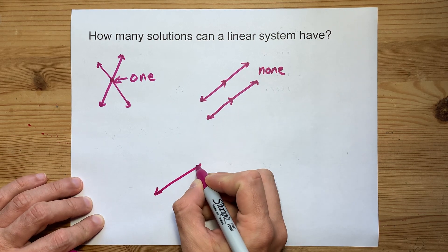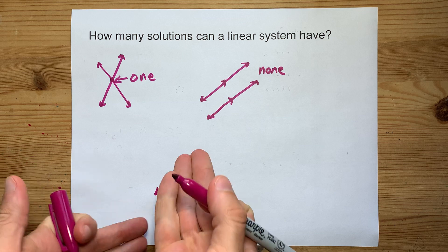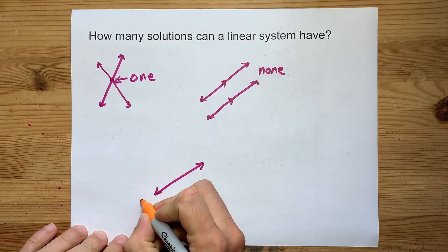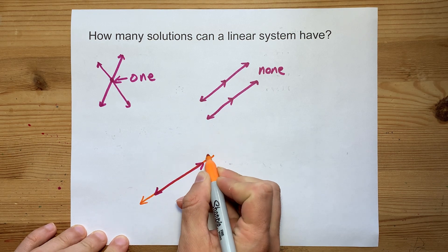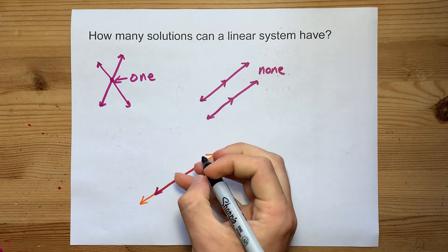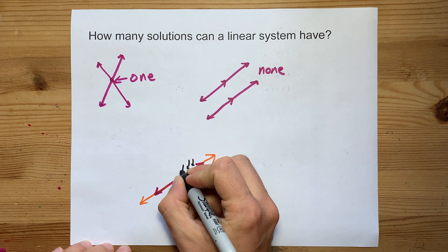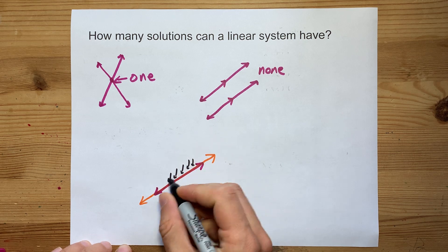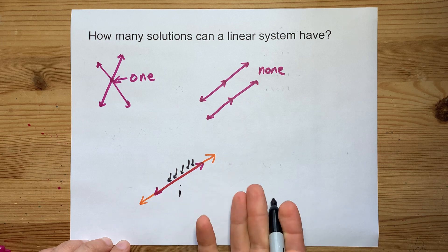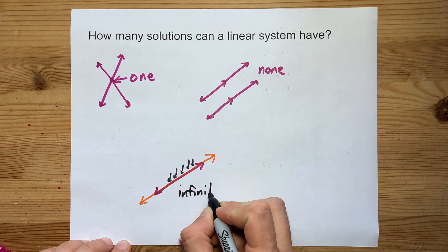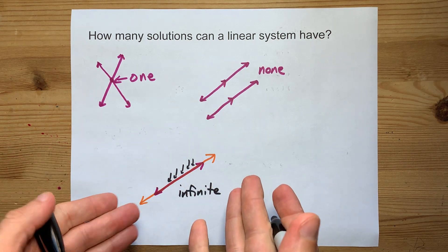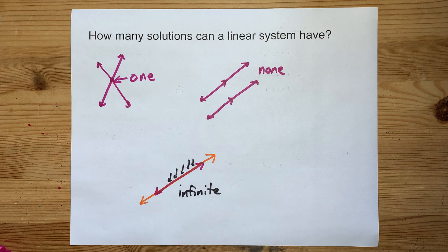Alternatively, if you have one line at a given slope and height on the page, and then a second line that has the same slope and the same y-intercept, or shares really any point — these lines meet here and here and here all the way across. These are basically the same line. We say that this has an infinite number of solutions, though an easier way to say that is that they're the same line.